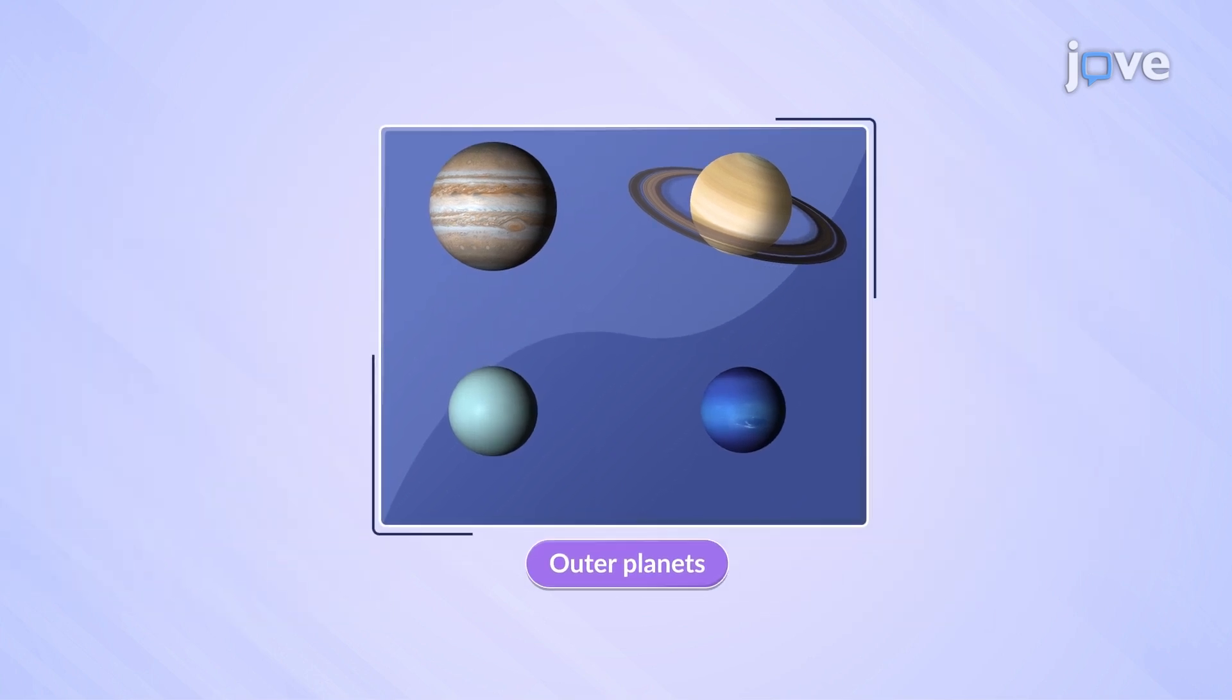Now, let's look at the outer planets: Jupiter, Saturn, Uranus, and Neptune, the farthest planets from the sun.